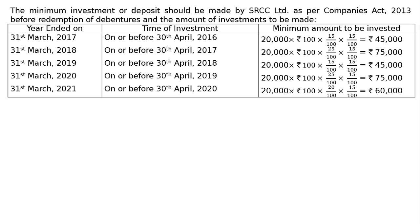The last redemption is on 31st March 2021, with investment on or before 30th April 2020. It is 20,000 debentures of Rs. 100 each at 20%, and 15% is invested, giving Rs. 60,000. The redemption percentages are 15%, 25%, 15%, 25%, and 20% in order, while investment and transfer to DRR are always made at 15% of the outstanding debentures.